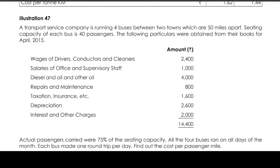Illustration 47. A transport service company is running 4 buses between 2 towns which are 50 miles apart. Seating capacity of each bus is 40 passengers. The following particulars were obtained from their books for April 2015.